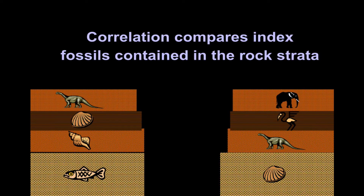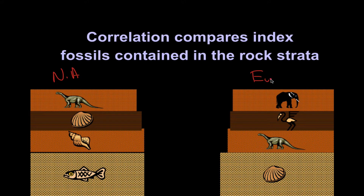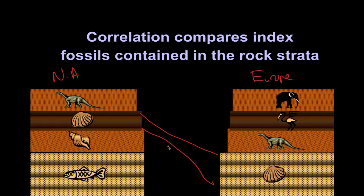Here's an example. We have two sets of rock layers — let's say this one is in North America and this one is in Europe. We can look at the index fossils going through each set and see four layers on each side. We notice that this rock layer here and this one over there contain the same index fossil. We also notice that where this dinosaur fossil is, it matches up to that layer over there as well. So looking at this, we can begin to sequence these rock layers.